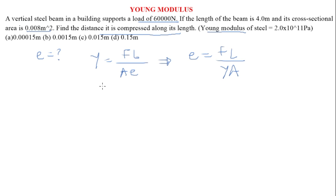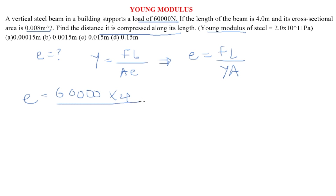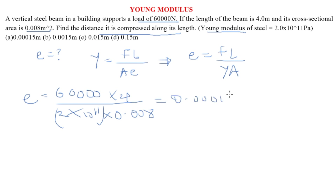We can substitute the values of F, L, Young's modulus, and the rest to get the extension. The force is the load being exerted, so we have 60,000 N. Then the original length is 4, upon the Young's modulus which is 2×10¹¹, multiplied by the area which is 0.008. So eventually we get the extension as 0.00015 meters.